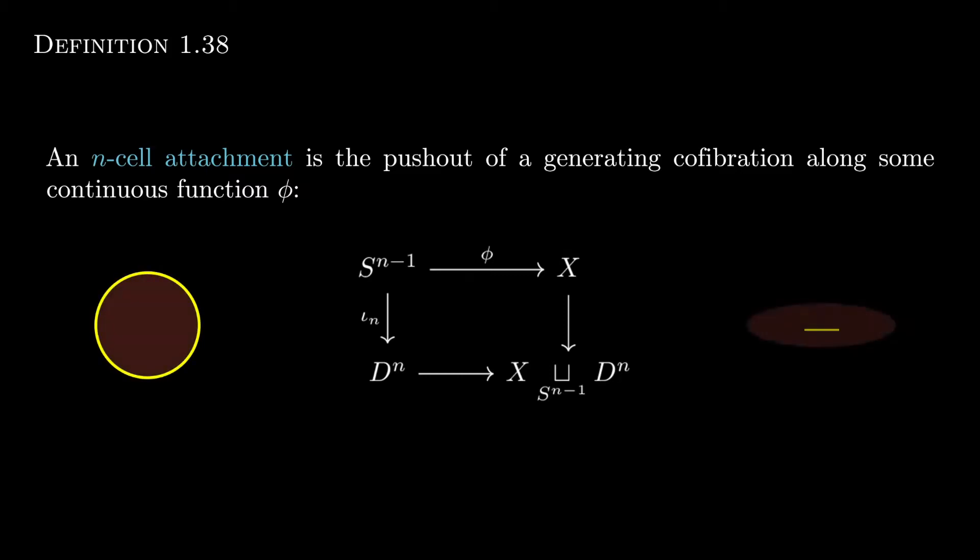So on the right, if that yellow line is where we want to attach the boundary of the disc to, that's what we do.